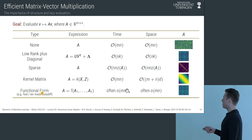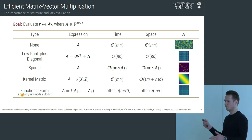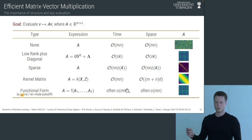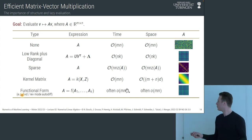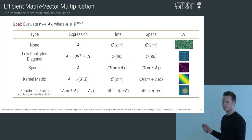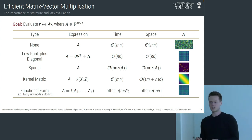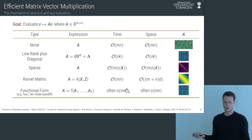Finally, there are matrices with more general functional form, like autodiff computation graphs where you apply the Jacobian chain rule in backpropagation through a neural network. In general these can be relatively unstructured, but with specific assumptions on the compute graphs you may save time in computing matrix-vector products.